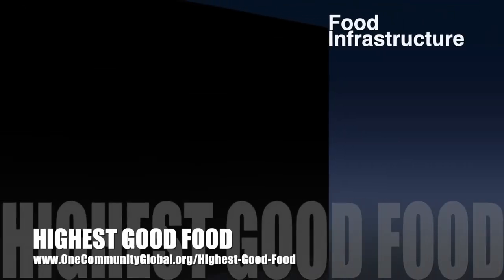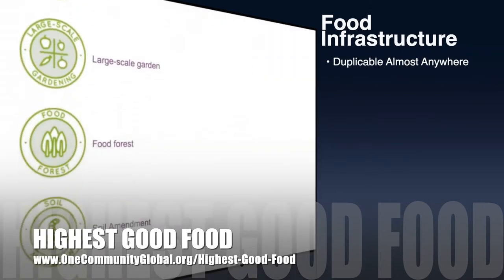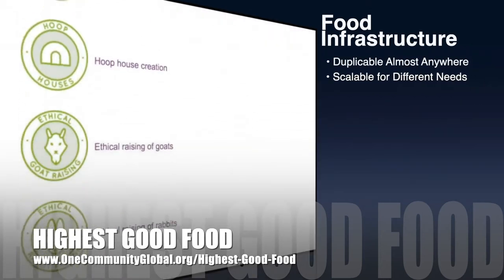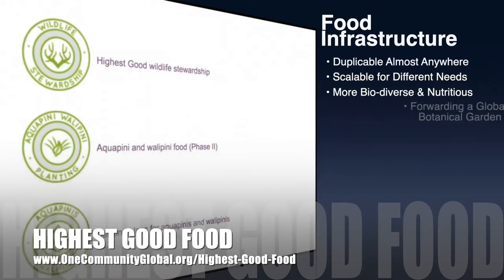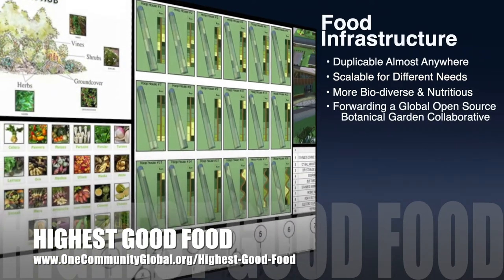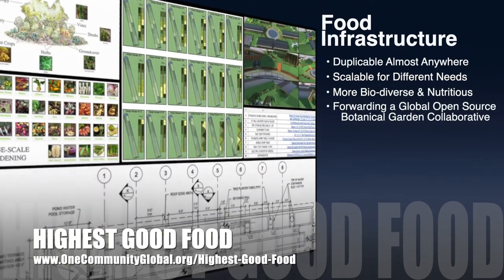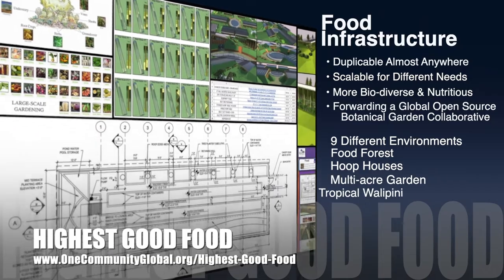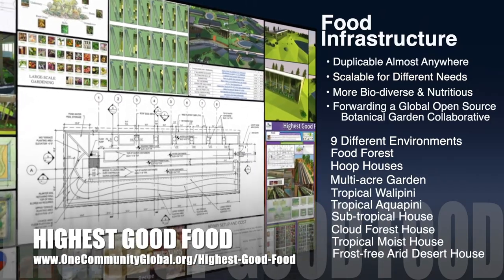One Community's approach to highest good food is duplicable almost anywhere, scalable for different needs, more biodiverse and nutritious, part of forwarding a global open source botanical garden collaborative, and includes nine different free shared and duplicable growing environments.